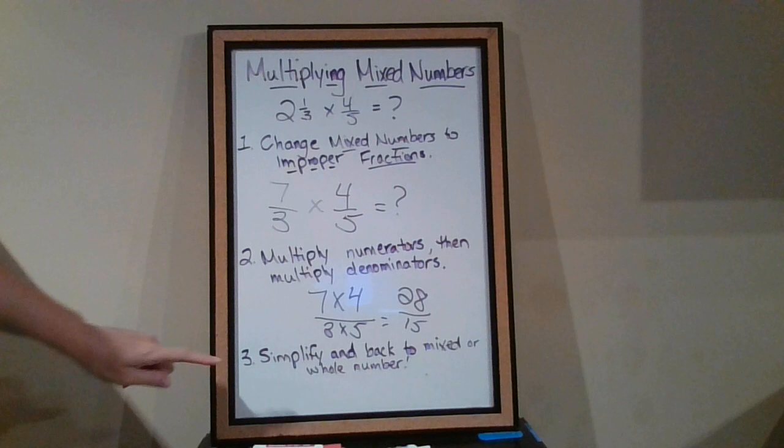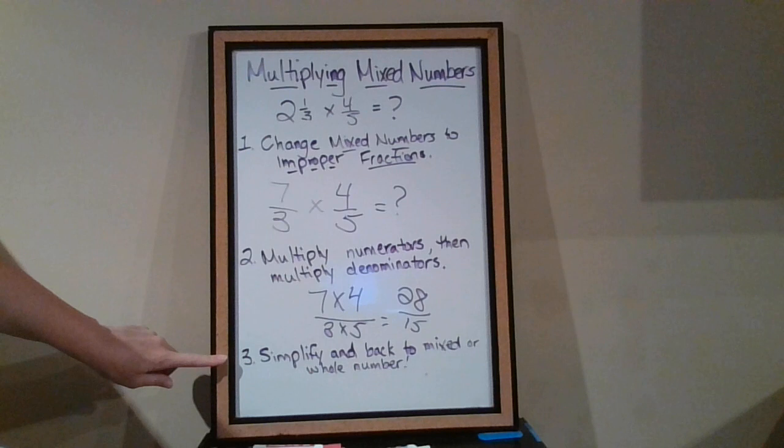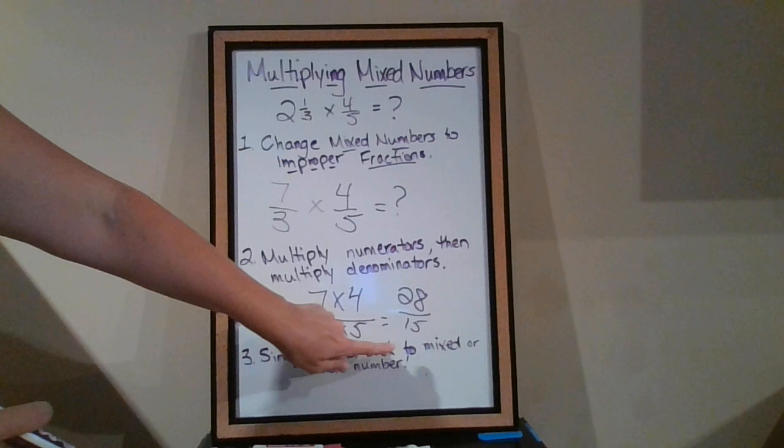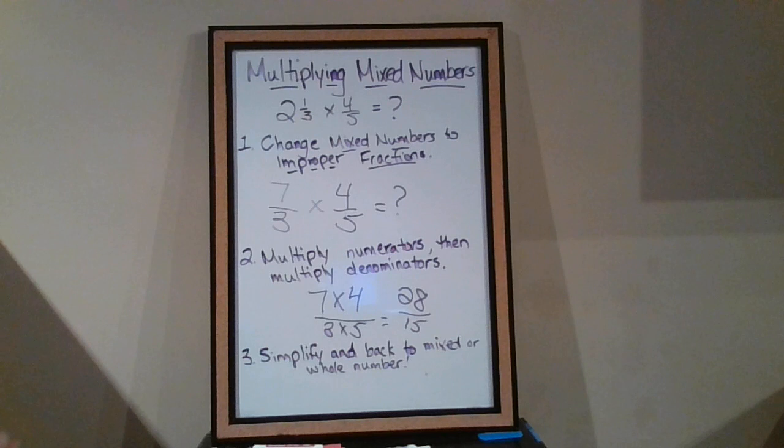We then want to ask ourselves always for the last step, could we simplify our answer? Or in this case, we're looking at an improper fraction, and we're going to ask ourselves, could we switch that back to a mixed number? Or maybe if it worked out, it might even be a whole number. Mixed numbers and whole numbers are always nicer as final answers than an improper fraction.